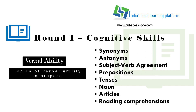Let's talk about the chapters you need to prepare for verbal ability. You should prepare synonyms and antonyms, subject-verb agreement, prepositions, tenses, nouns, articles and reading comprehension. For reading comprehension, there are tips and tricks you should follow to attempt questions easily without reading the whole passage, which will also save time. If any section takes more time, you can adjust accordingly.